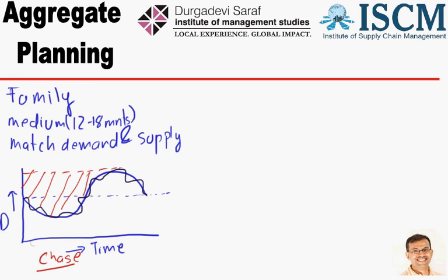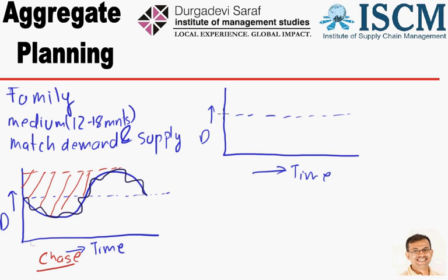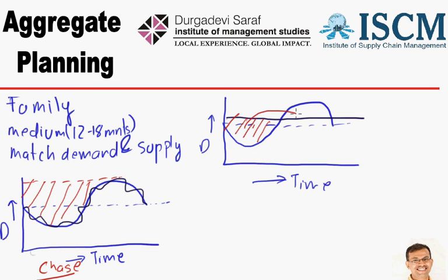Another method is to have level production. With the same demand curve going down and coming back up, a manufacturer could build at some constant level. By building at this constant level, inventory builds up in periods where production is higher than demand, and that inventory is then used in periods when production is less than demand. This method is called level capacity planning — we live with lower capacities and higher utilizations, but the problem is that we build up inventory.